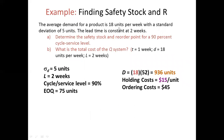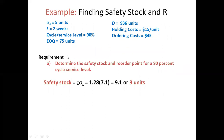The average demand for the product is 18 units per week. The first requirement is to calculate the safety stock, using the formula safety stock = Z × Sigma_D × √L. For a 90% cycle service level, the Z value is 1.28.